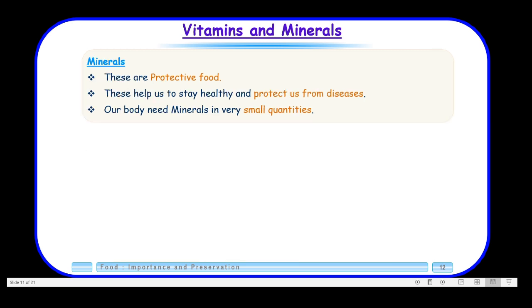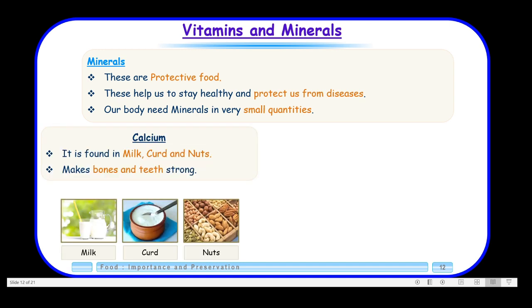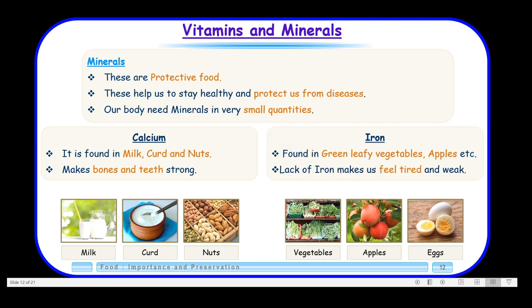We will now move on to the next protective food: minerals. Like vitamins, they also protect us from diseases and are needed by the body in small quantities. You must have heard of calcium — calcium is a mineral. We get calcium from milk, curd, and nuts, and it makes our bones and teeth strong. Another mineral is iron. We get iron from green leafy vegetables, apples, and egg yolk. If we don't eat enough iron, we will feel tired and weak.